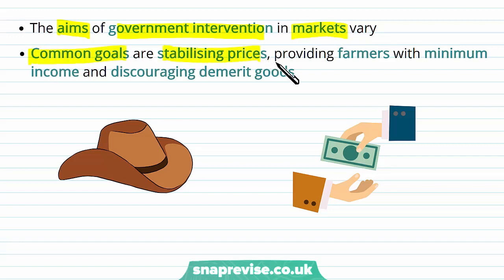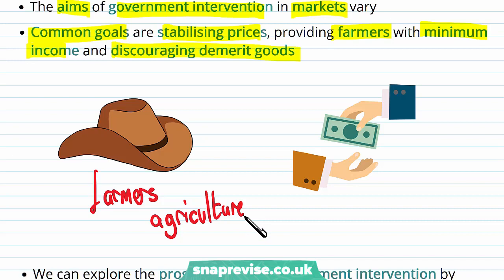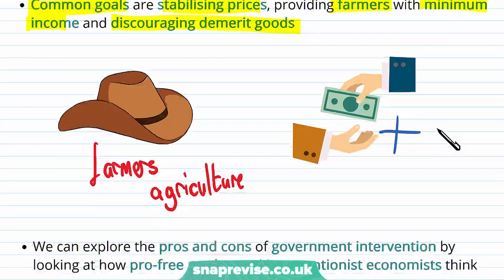The aims of government intervention in markets will vary. Common goals are stabilizing prices, providing farmers with minimum income, and discouraging demerit goods. An example of government intervention is dealing with farmers within the agricultural industry, which is viewed to have weighted importance to the government. Even if farmers aren't earning a wage high enough to keep them in the industry, the government is going to increase their wages by raising the minimum income that they receive.